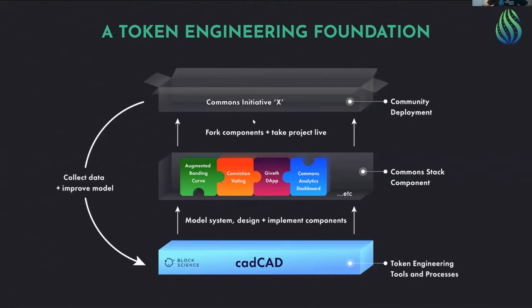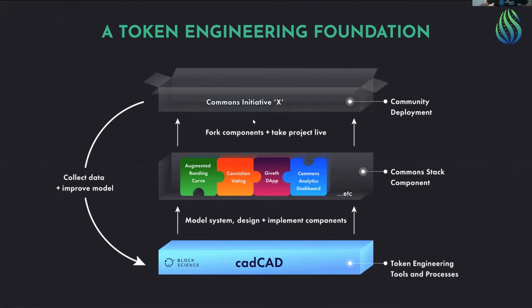CatCAD is a tool by BlockScience, the other co-founder of the Commons Stack. CatCAD is a bit like AutoCAD — it is used to model, simulate, and test everything you build. We're talking about public infrastructure, so you cannot just build this. We are not writing one single line of code before we have designed and simulated this. Especially because we're talking about economies, this is super important. That's the unique thing about the Commons Stack.